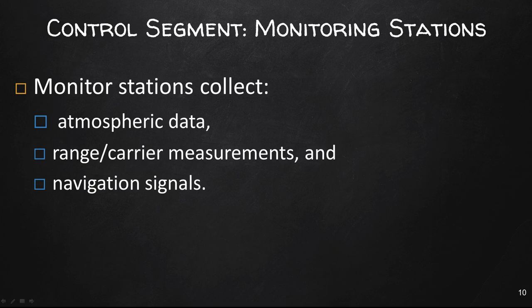The data that feeds the master control station comes from monitoring stations. These monitoring stations track the GPS satellites as they pass overhead and channel their observations back to the master control station. The master control station collects atmospheric data — such as ionosphere and troposphere information — range and carrier phase measurements, and navigational signals. It's very important that we know where these satellites are in space; otherwise we can't determine the time it takes for a signal to reach Earth, or how far away it is.